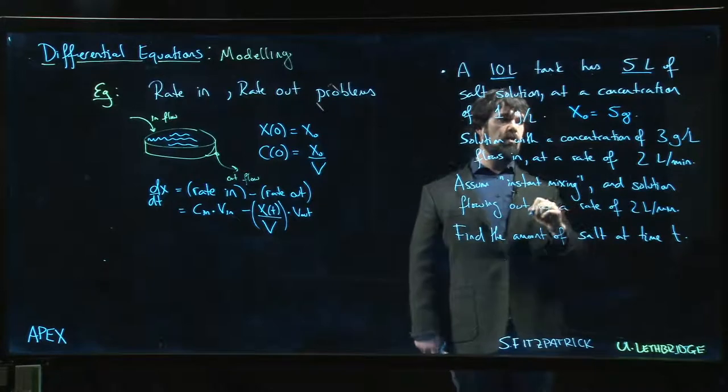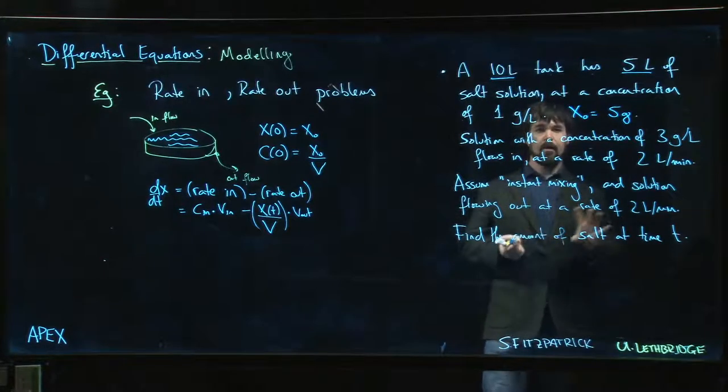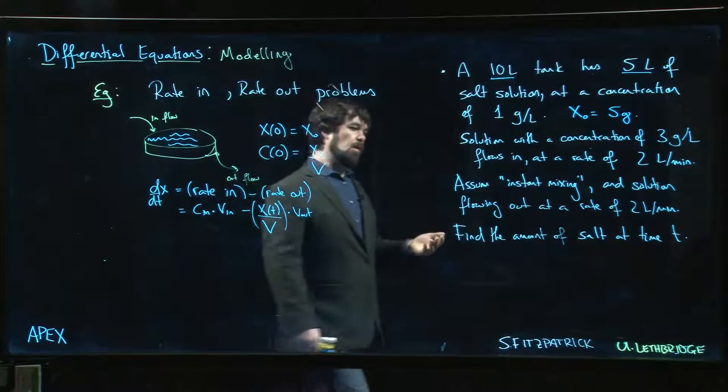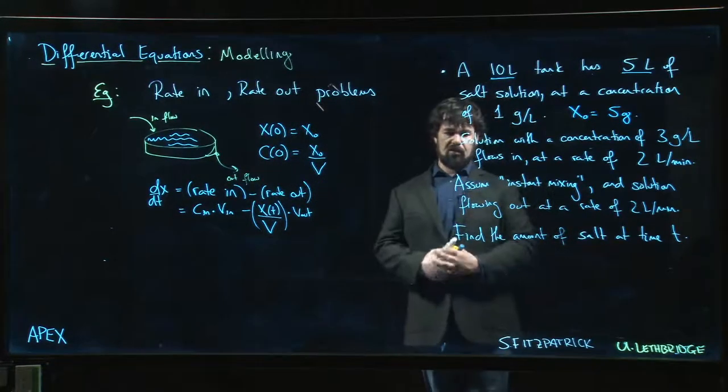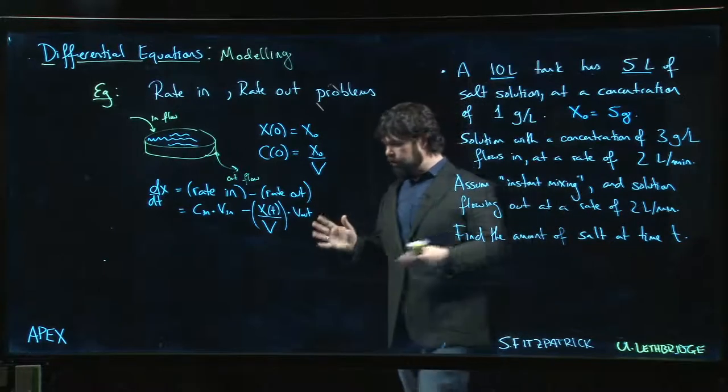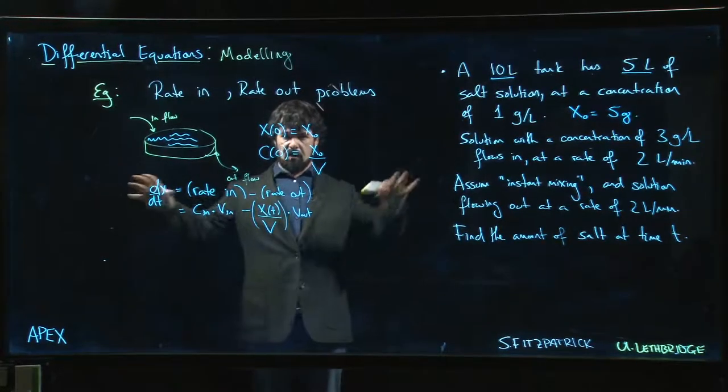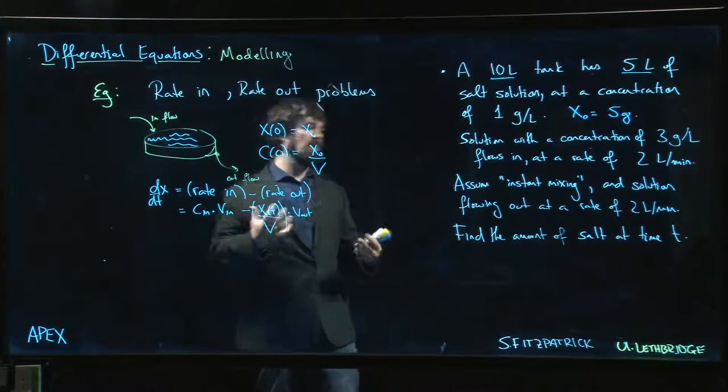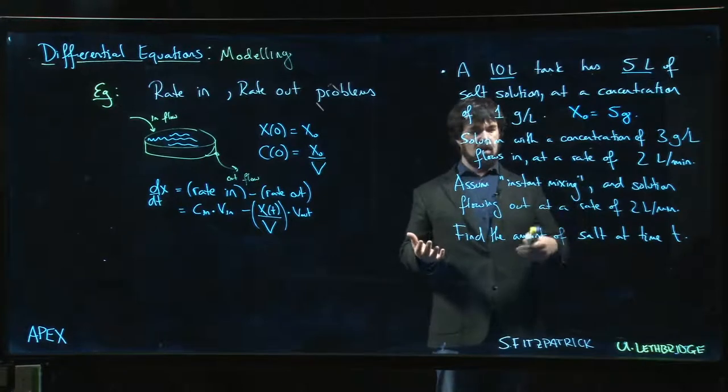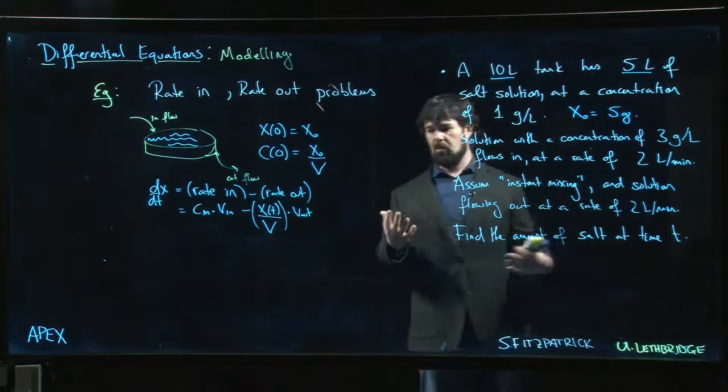Right, I have five grams of solution initially. Now there are a couple of simplifying assumptions that we make in these problems just to make sure they're actually solvable. One is this instant mixing - this is an assumption that isn't really physical, but it guarantees that we have uniform concentration. It's basically saying that we want to make sure that the concentration on one side of the tank is the same as the concentration on the other side of the tank, because if we don't have that, then how do we actually model the concentration coming out?